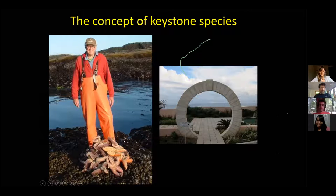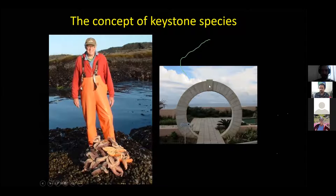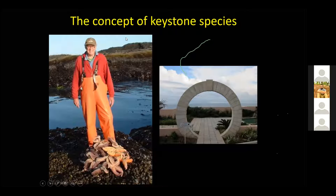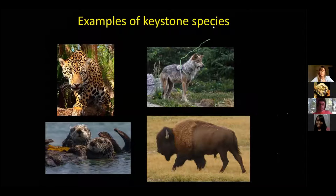Basically what he did is he experimentally removed this top predator in the shores of Western US — the sea star. After he removed the starfish, the ecosystem changed dramatically. The California mussel population exploded and there were drastic changes in the community. Inspired by the concept of the keystone arch, this small stone is under the least pressure, but if you remove it, the whole arch collapses. And then he created the concept of keystone species.